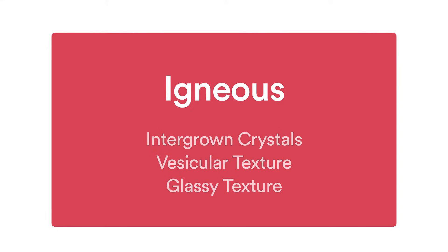Finally, if that lava cools fast enough, you won't get any crystals or any air bubbles, and the result will be a glassy texture. So those are the three main characteristics we look for in igneous rocks: intergrown crystals, vesicular texture, or a glassy texture.